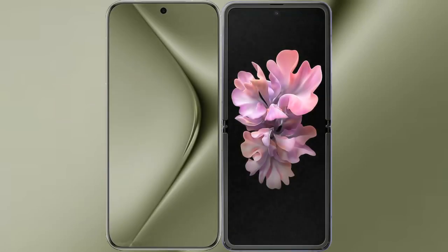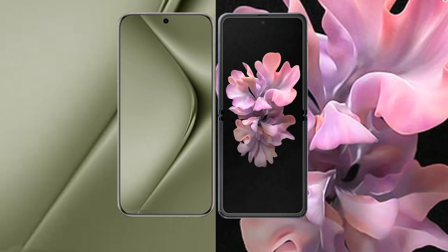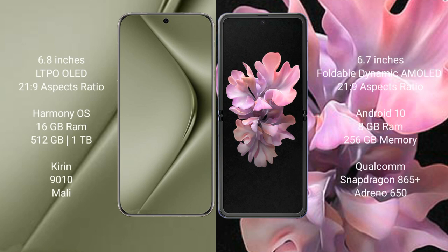I will compare the new Huawei Pura 70 Ultra with the Samsung Galaxy Z Flip. The Huawei Pura 70 Ultra comes with a 6.8-inch LTPO OLED display with an aspect ratio of 21:9, while the Samsung Galaxy Z Flip comes with a 6.7-inch foldable Dynamic AMOLED display, also with an aspect ratio of 21:9.